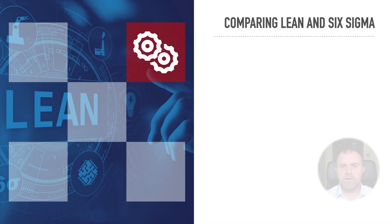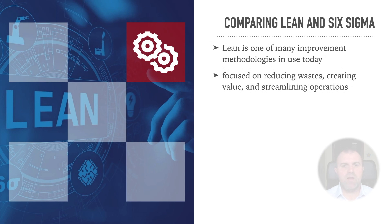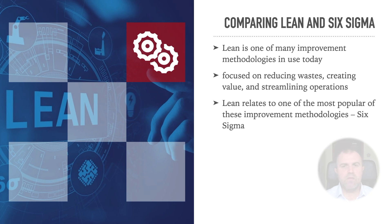Comparing Lean and Six Sigma. Lean is one of many improvement methodologies in use today, focused on reducing waste, creating value, and streamlining operations. This topic shows how Lean relates to one of the most popular of these improvement methodologies, Six Sigma.